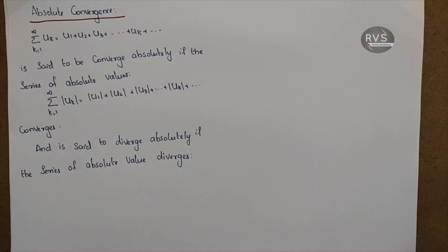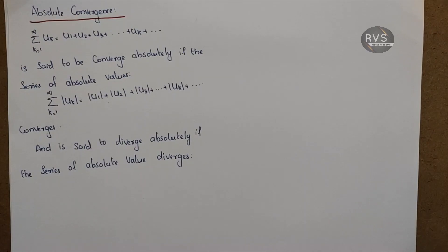The test we will use is the alternating series test, which is the Leibniz criterion test. If u_{k+1} is less than u_k, and the limit as k tends to infinity equals 0, then if both conditions are satisfied, the series will be convergent.